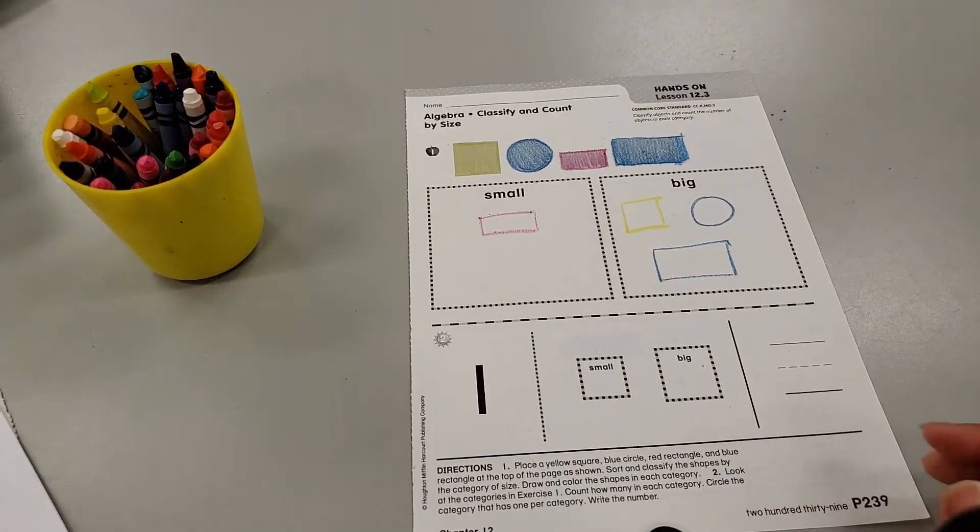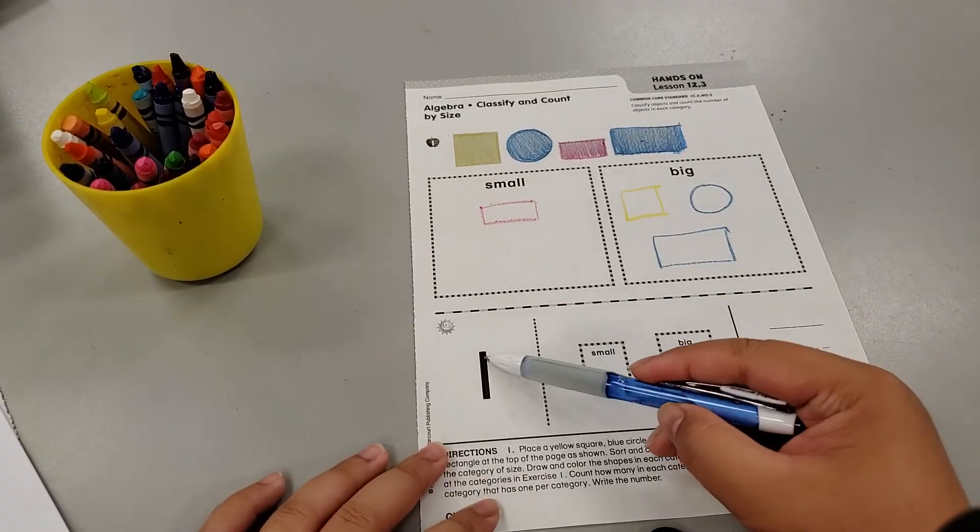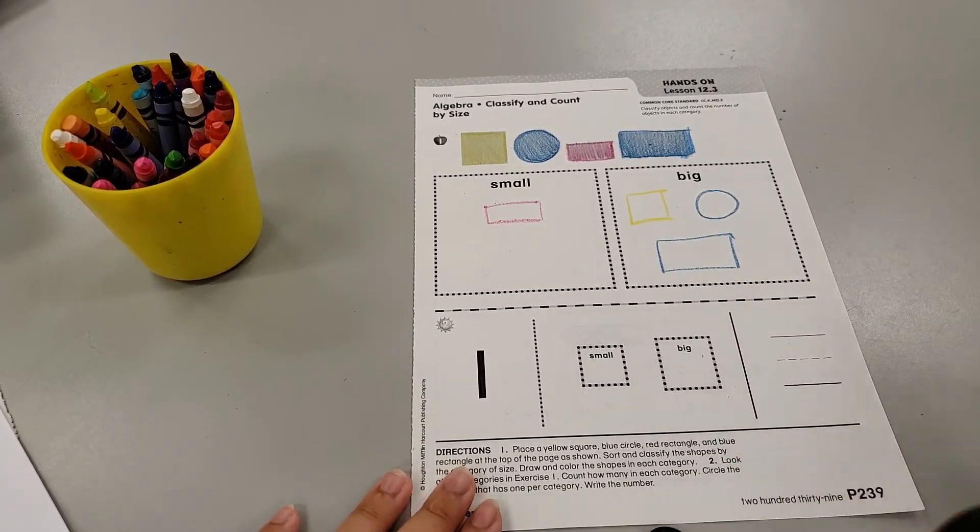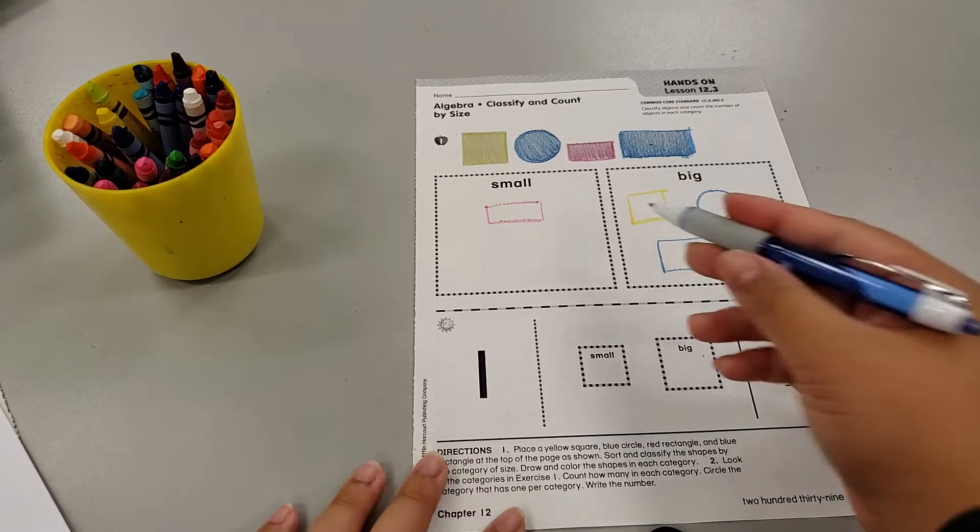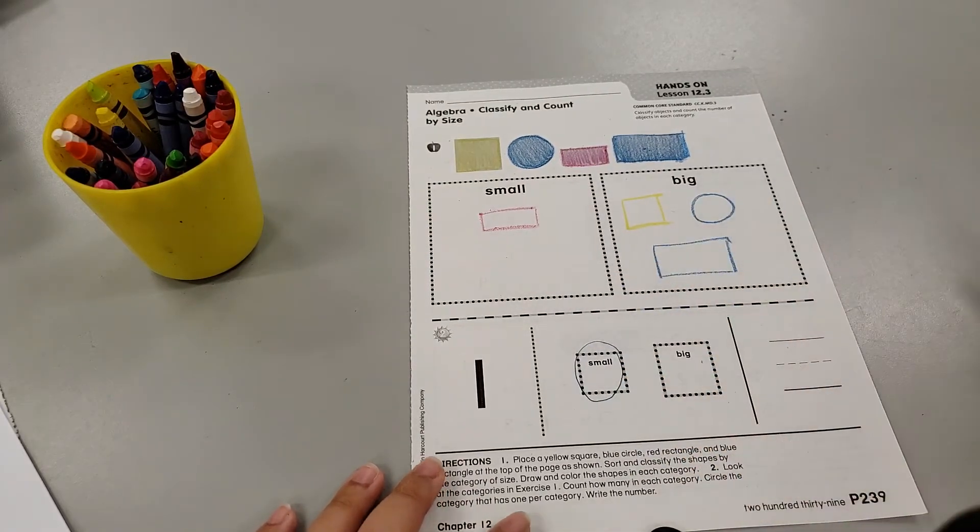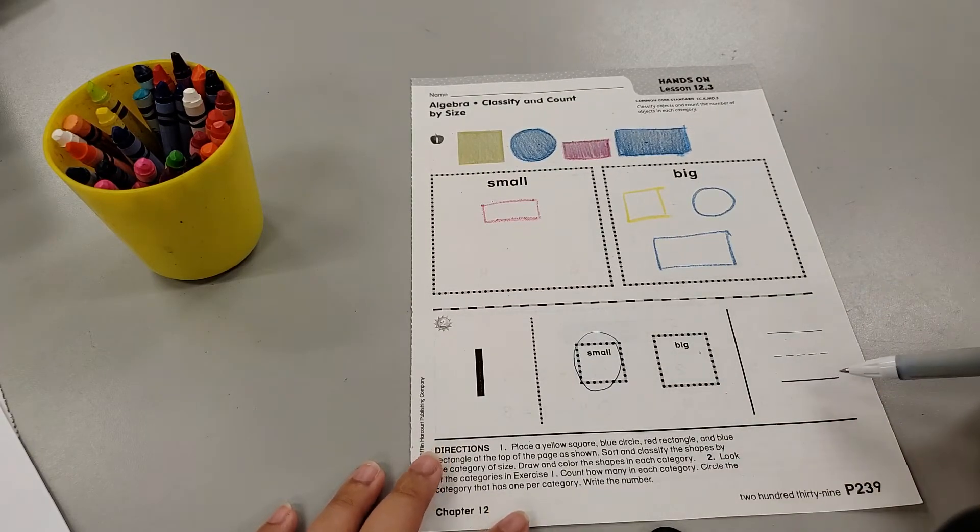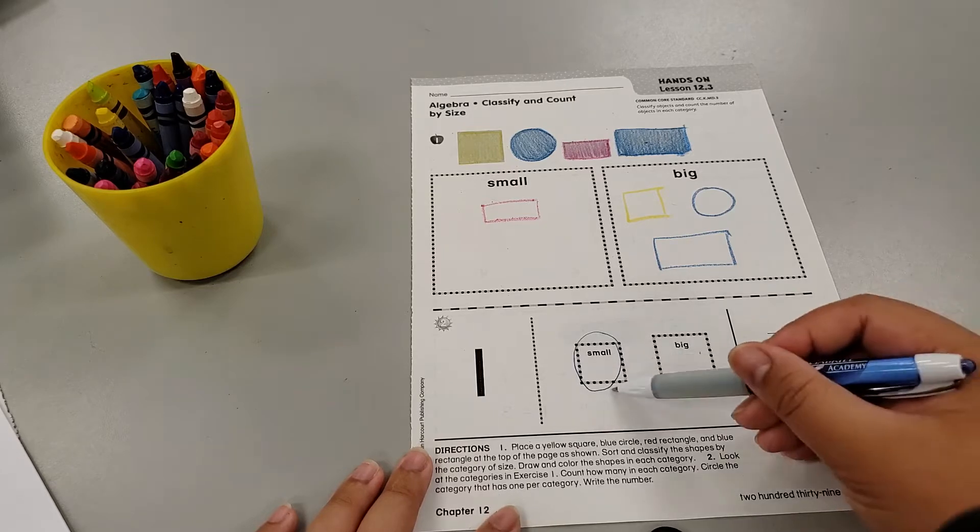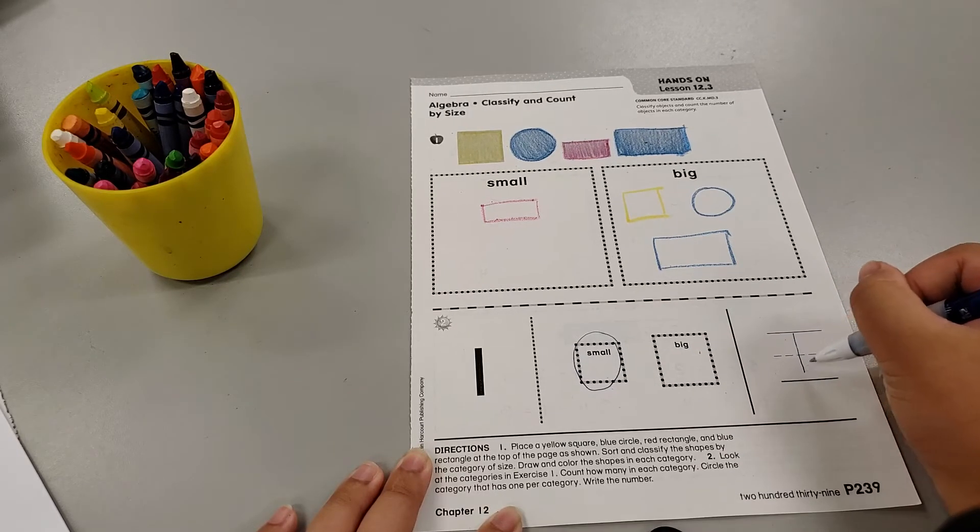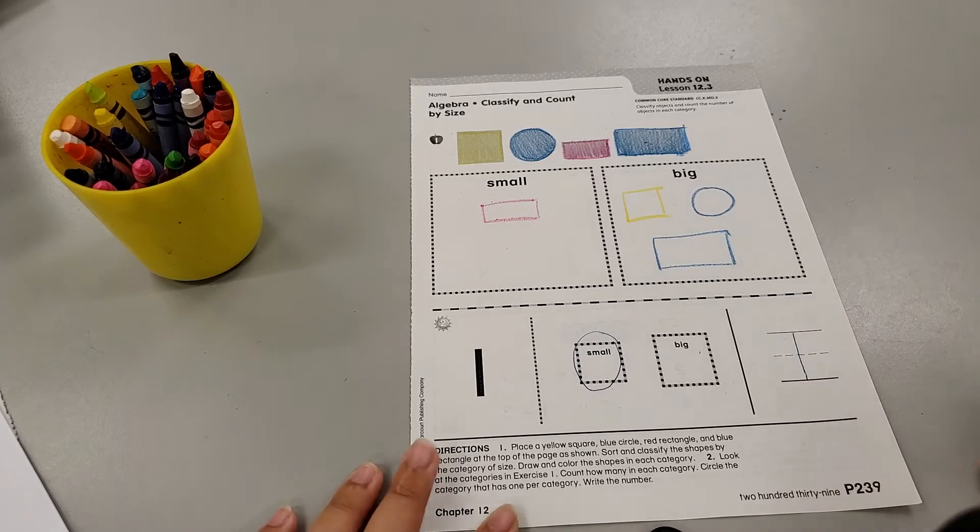All right. Now, our paper is asking. We're looking for a category with one shape. Was it the small category or the big category? My eyes show me small. How many categories had one shape? Only one. There we go.